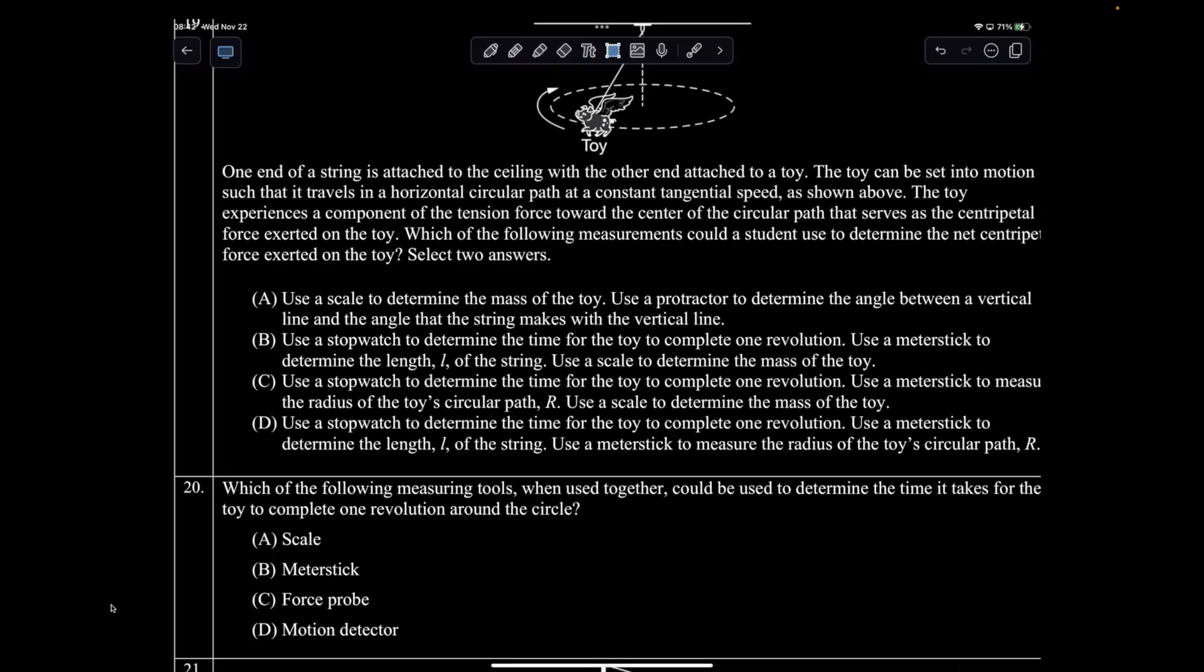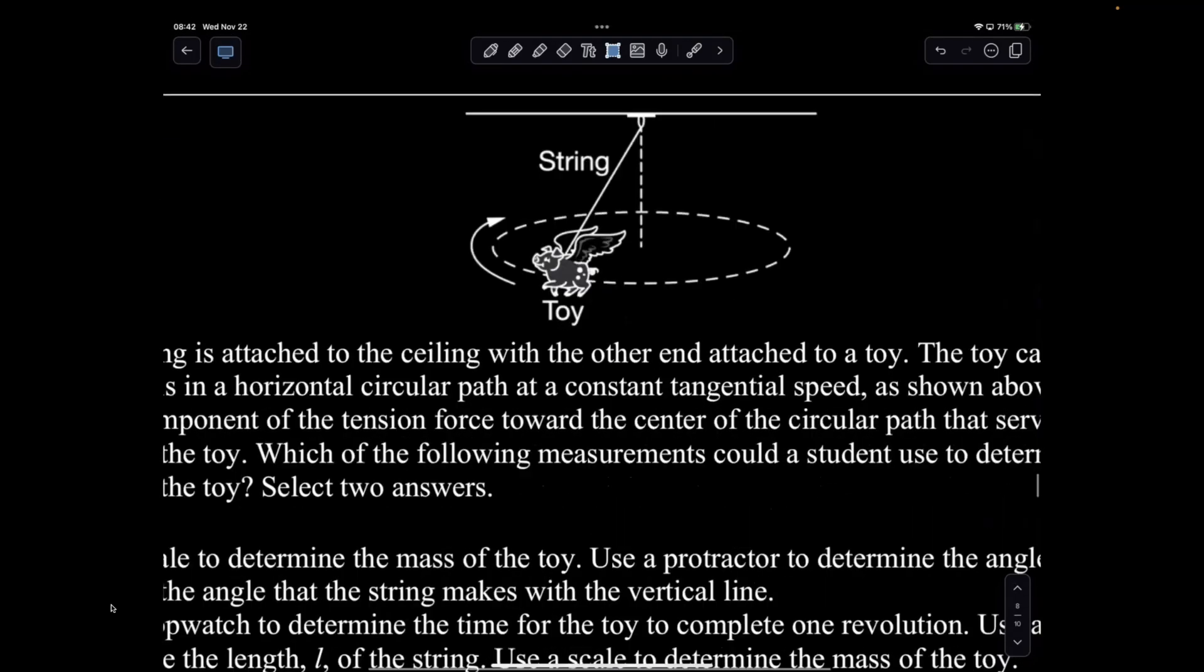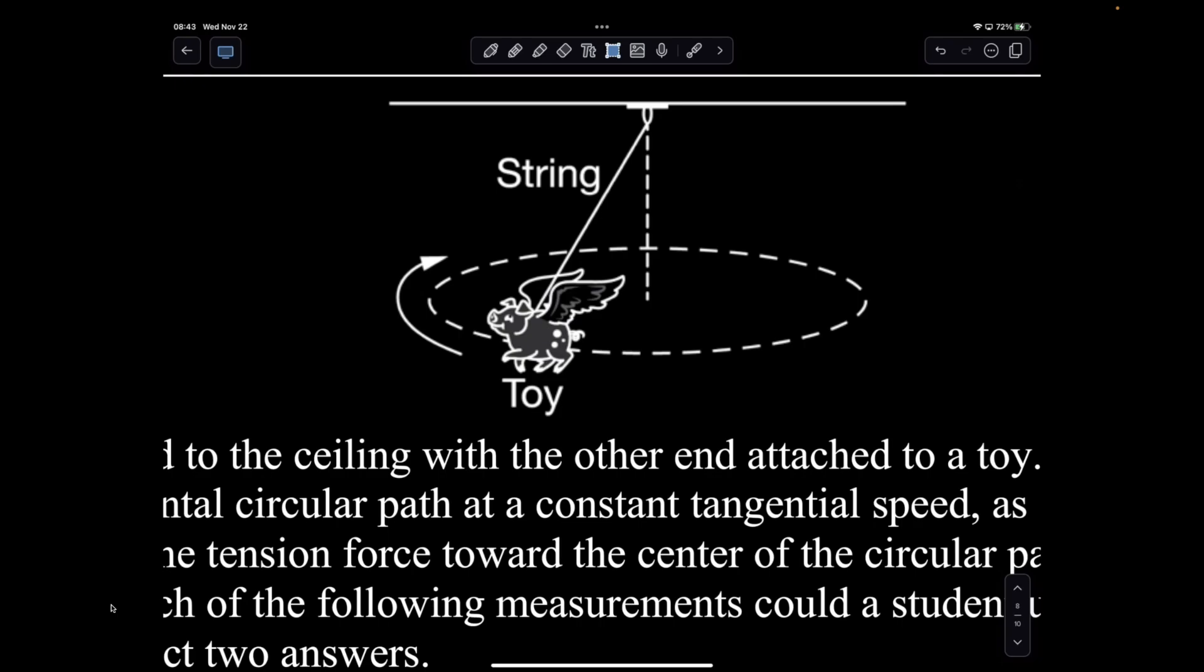Question 20 was for the same setting for our lovely toy. The original question that you will see on AP Classroom includes five options and asks you to choose two things.